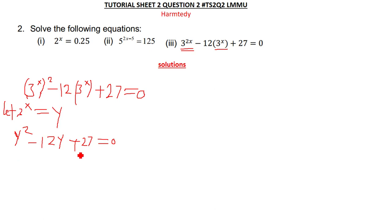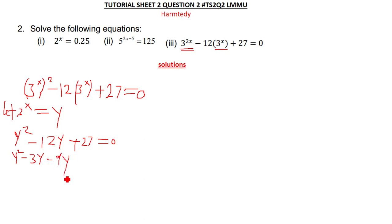Now it's a matter of solving a quadratic equation. We find two numbers that when multiplied give 27 and when added give negative 12. Those numbers are negative 3 and negative 9. So we split the middle term: y squared minus 3y minus 9y plus 27 equals 0.